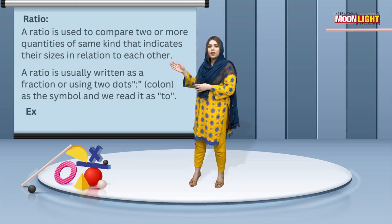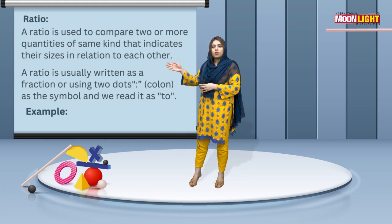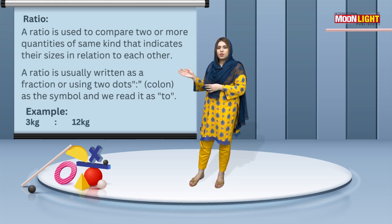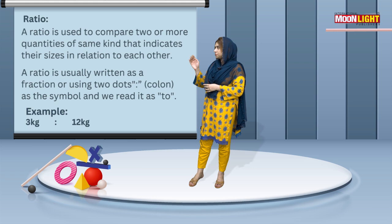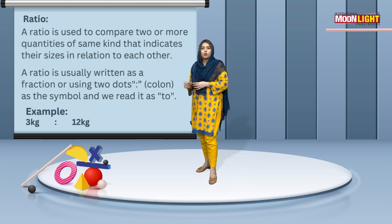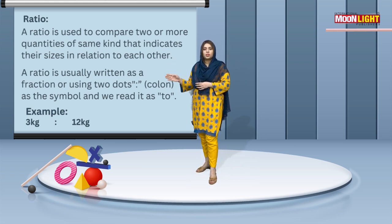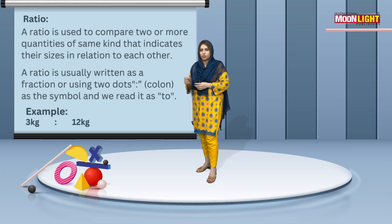For example, three kilograms ratio twelve kilograms — you have two quantities in kilograms. Because both units cancel each other.